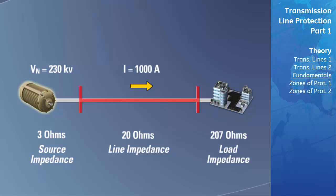If a fault were to occur on the power system in a location that would cut off the path of current flow to the load, the total impedance of our power system would change to only 23 ohms. Due to the drop in impedance, our current level would now increase substantially.